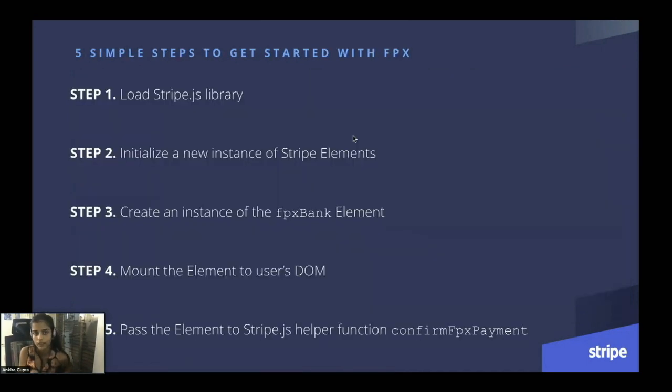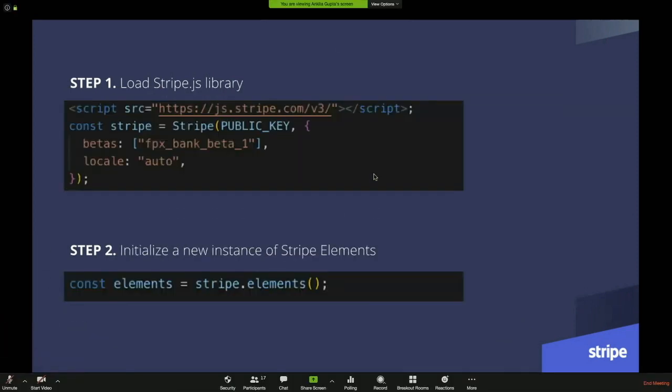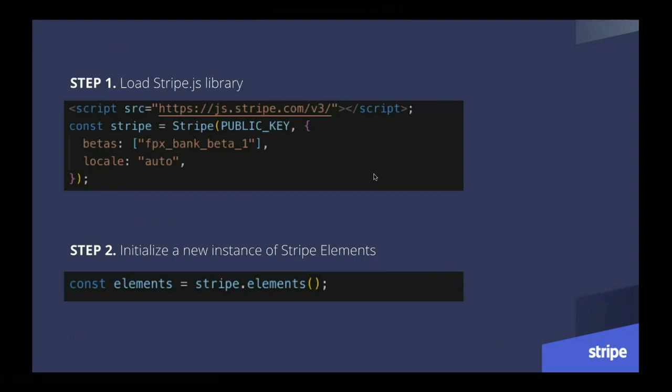There are five steps to get started with FPX. The first step is to load the Stripe JS library. Once you load the Stripe JS library, it gives you an instance of Stripe, and you can pass in your public key as well as a bunch of options. Using this instance, you can call a method called Stripe elements, which creates an instance of elements itself using the Stripe instance from the previous step.